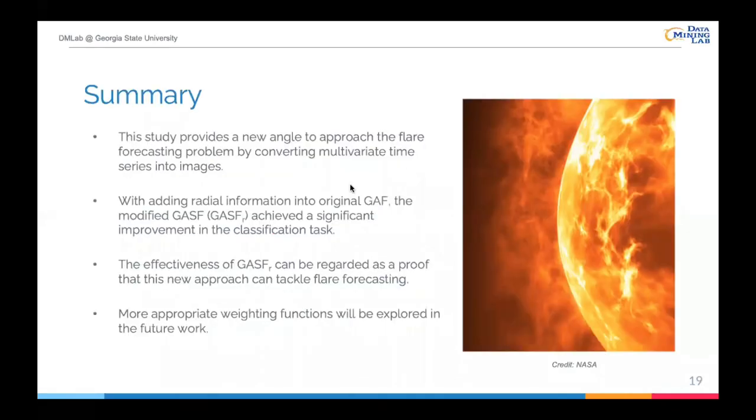In sum, this study provides a new angle to approach the flare forecasting problem by converting multivariate time series into images. With adding radial information into original GAF, the modified GASF (GASF-R) achieved a significant improvement in the classification task. The effectiveness of GASF-R can be regarded as a proof that this new approach can tackle flare forecasting problems. More appropriate weighting functions will be explored in the future work.